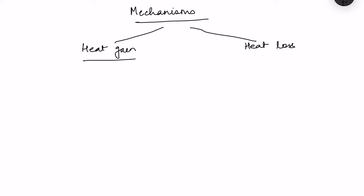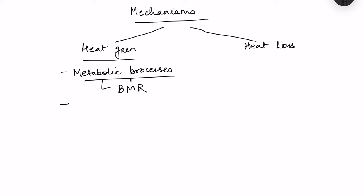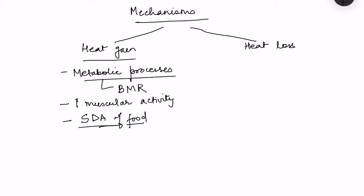Heat is gained in the body by basic metabolic processes going on inside. Even when we are at complete physical and mental rest, these metabolic processes continue because they are important for cell survival — that is known as the basal metabolic rate. Any increase in muscular activity will cause an increase in heat production. A third important process is the specific dynamic action of food: when we take food, energy is required for digestion and absorption of nutrients, so heat is produced as well.